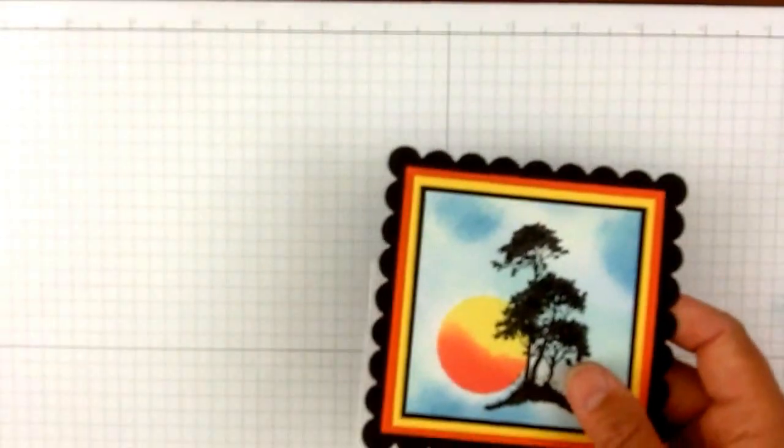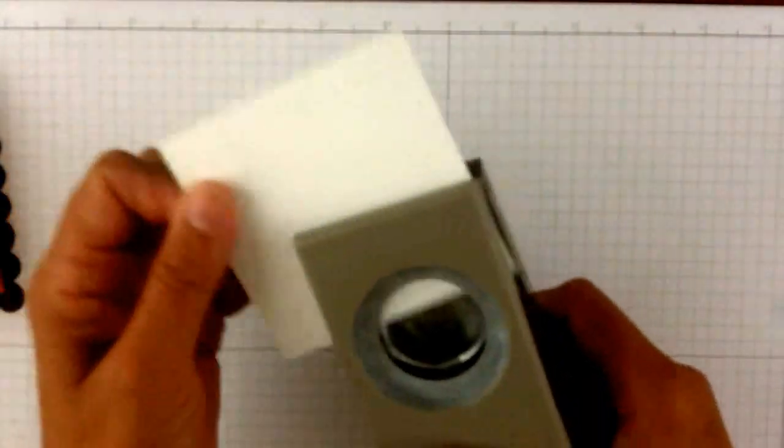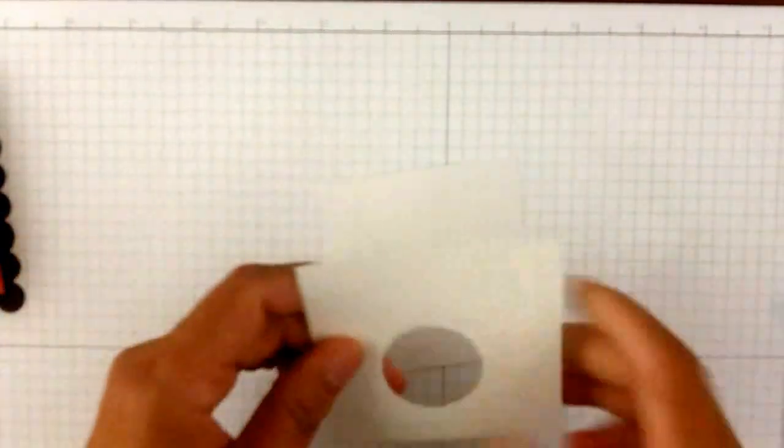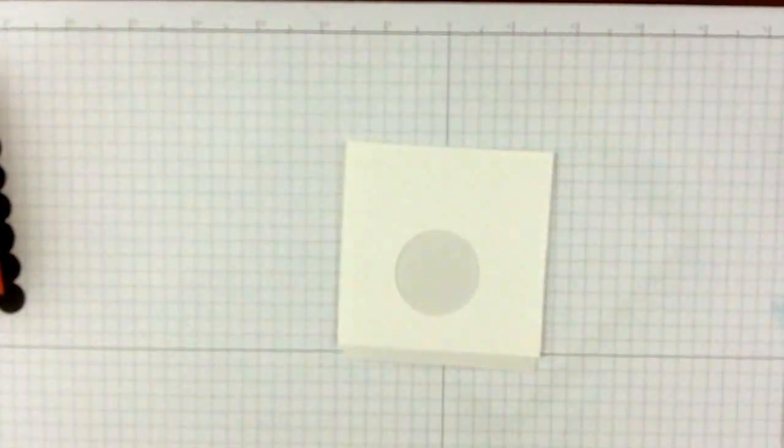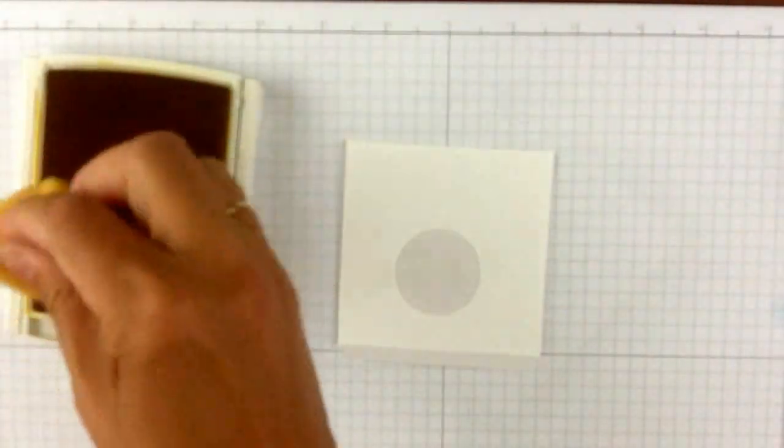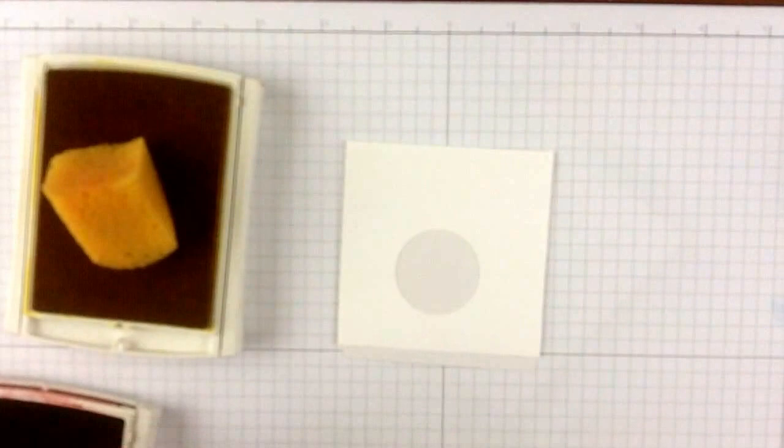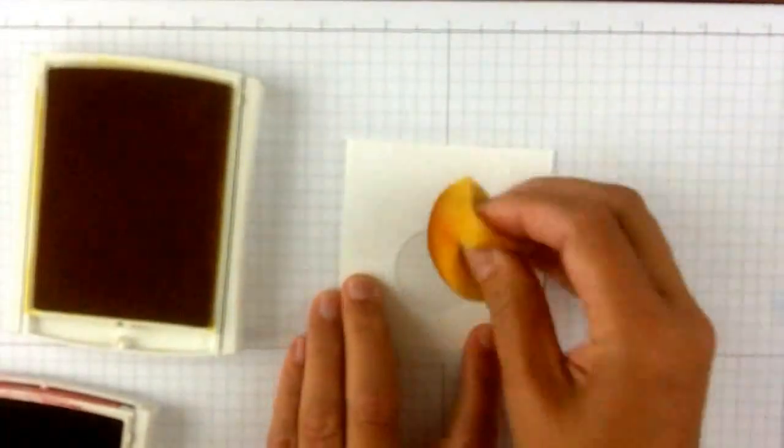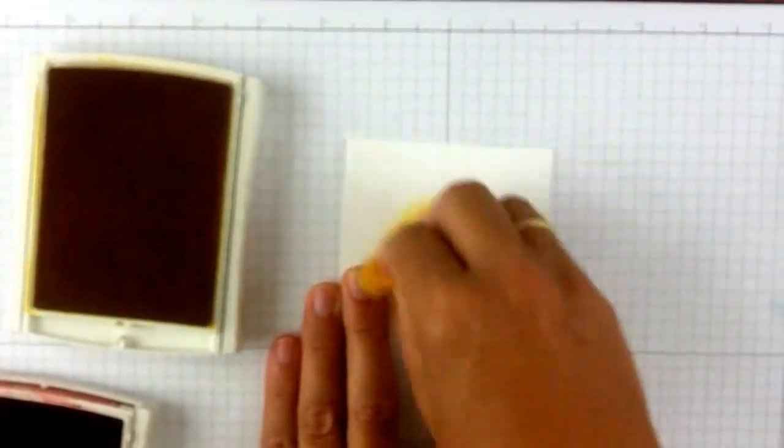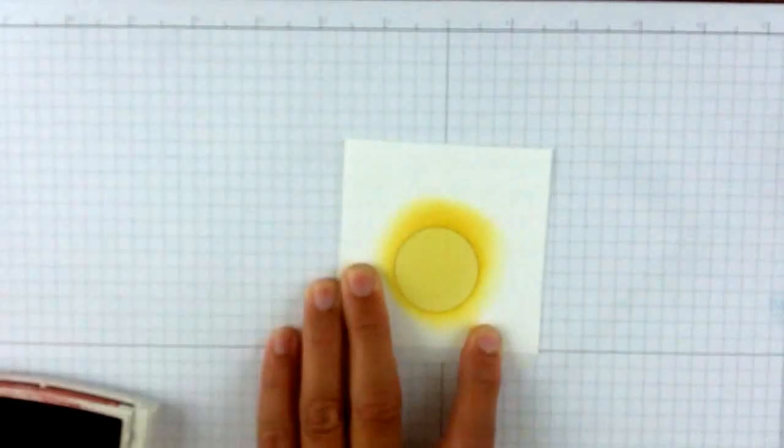To make this pretty front, I'm going to take a piece of scratch paper and pop out a circle. This is one and three-eighths that I'm using. I'm going to put that down where I want it. I'm going to be using yellow, daffodil yellow, and real red. Just holding this, I'm just going to scrub that circle. It's going to give me a really bright look there.